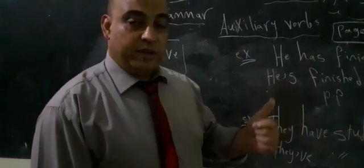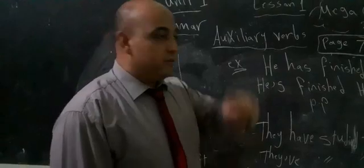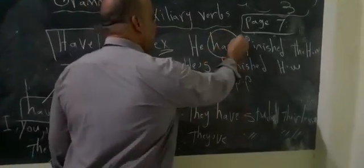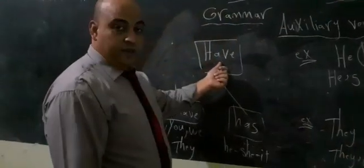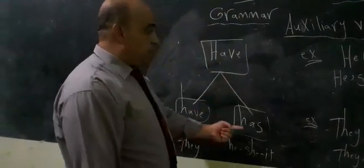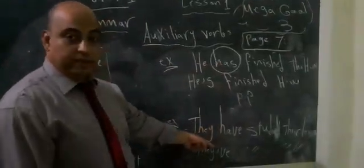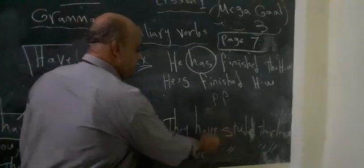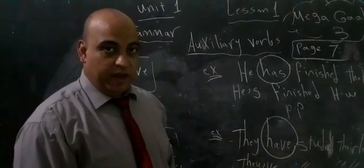The first question is: circle the auxiliary verb. Put a circle around it. You know that 'have' is the auxiliary verb—have or has. So you will look for have or has in the sentence. 'They have studied'—put a circle on the auxiliary verb there.